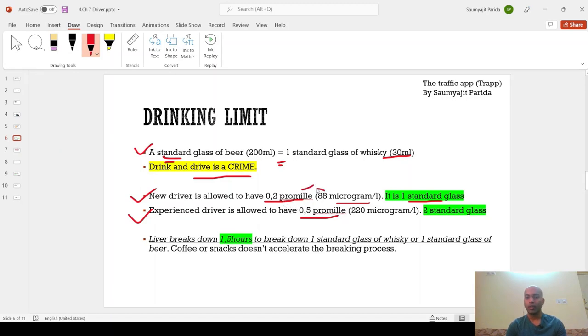Also, if we convert this and this, if this equals to 0.1 promil is equals to 44 microgram per litre. So, if 0.5 promil, then 0.5 into 44, it is 220 microgram per litre. And this is equivalent to two standard glasses. Yeah, you can do the calculation.